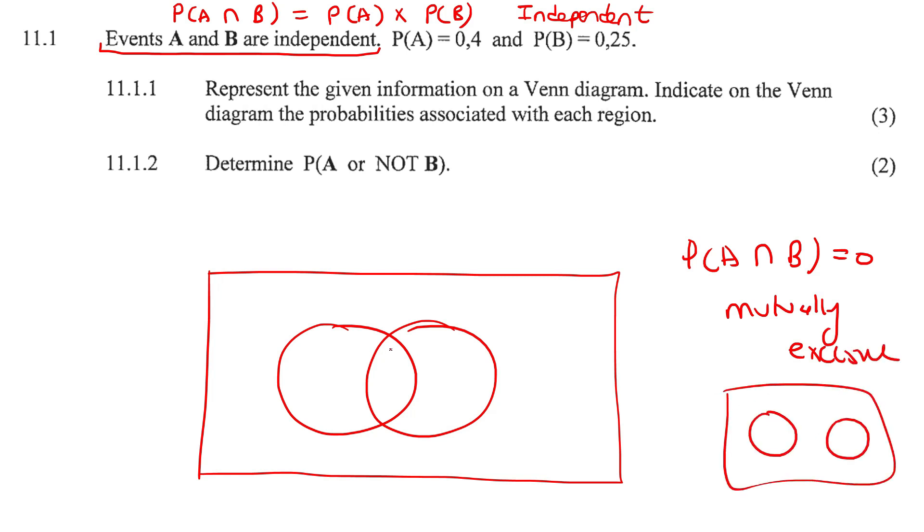So then, how do we know that they intersect? Well, they just told us that they are independent. So that means that the probability of A and B is these two multiplied together, and that won't give us zero. So there is definitely an intersection in the middle.